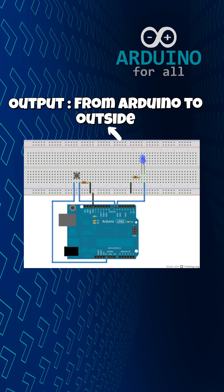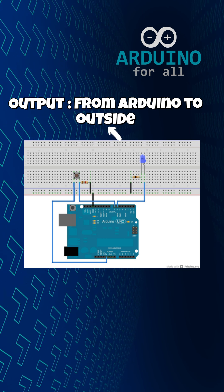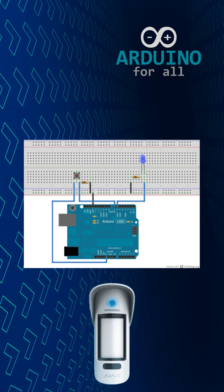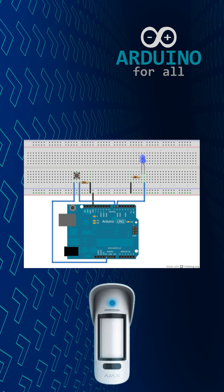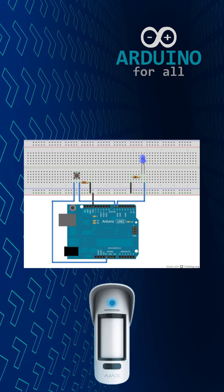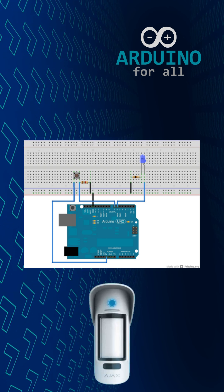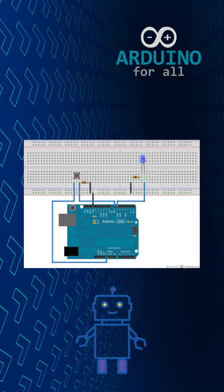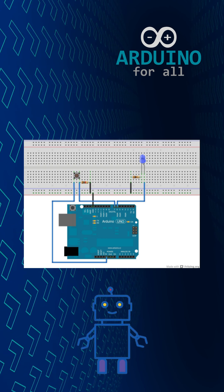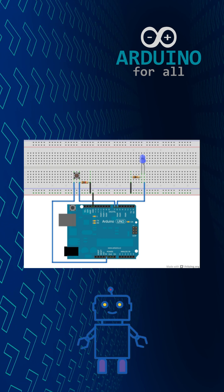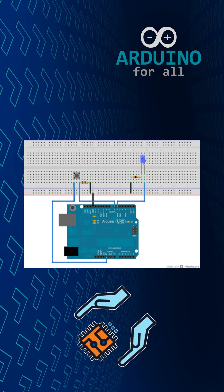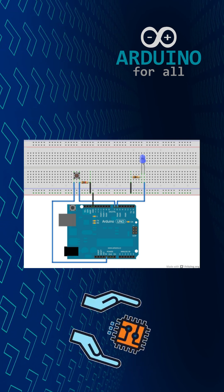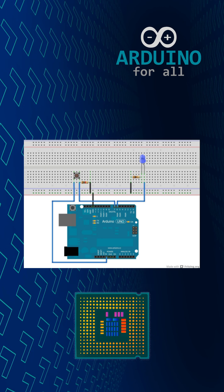When a pin is configured as an input, the microcontroller reads the state of that signal. It checks whether the voltage on that pin is high or low and interprets it as a digital 1 or 0. This is how buttons, switches, or digital sensors send information to the board.